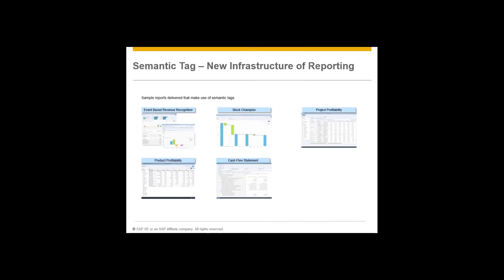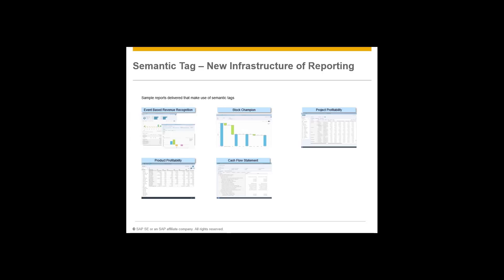To give you an idea of what some of these standard reports look like: event-based revenue recognition is something we've done for the professional services industry. The idea is that with every time recording, instead of the time recording resulting in costs that sit as expense on the project until period close when you run results analysis and settle those costs, you've got a piggyback posting. If you've got the billing information behind that commercial project — which you typically do in professional services and in some manufacturing organizations — you can use the information on how that project is going to be billed and on the plan profit to derive the revenue associated with that time recording as soon as it's posted. We've got some nice apps built with standard tools that allow you to view that data based on these semantic tags.